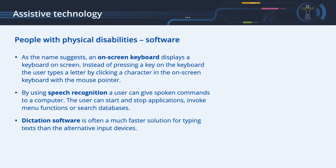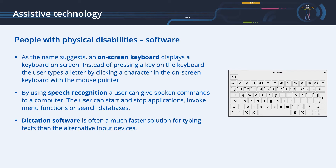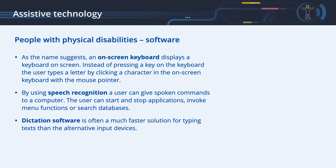Assistive technology for people with physical disabilities — Software. Even though hardware solutions can offer many possibilities, they can be improved by software. An on-screen keyboard displays a keyboard on screen; instead of pressing a physical key, the user types a letter by clicking a character using one of the alternative input devices. By using speech recognition, a user can give spoken commands to a computer — starting and stopping applications, invoking menu functions, or searching databases. Dictation software is often a much faster solution for typing texts than alternative input devices.